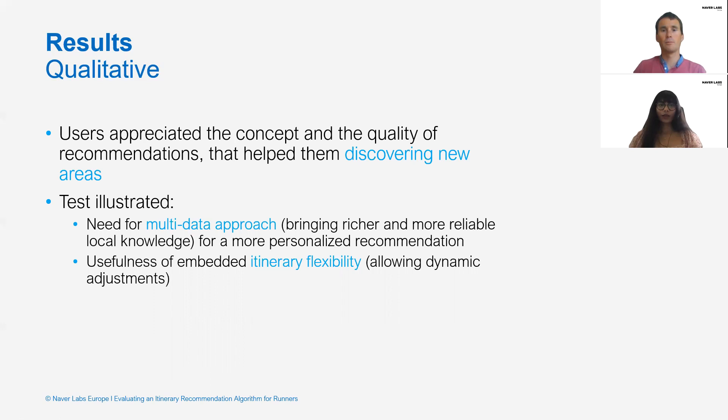However, they had concerns regarding safety and negative ambiance of some places. They also faced issues due to incorrect or incomplete map data labeling, where the tours included parts that did not exist, crossed private properties, or were temporarily closed. A complementary approach of mining map data and combining more reliable local knowledge would generate personalized recommendations. It furthermore illustrated that embedding flexibility within the itinerary would be useful and allow dynamic adjustments in unplanned situations like construction work.